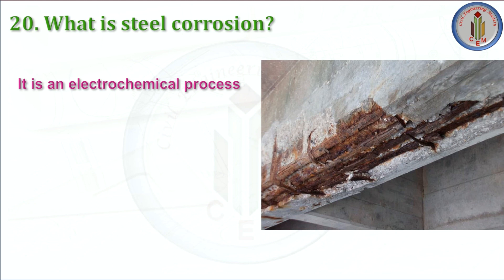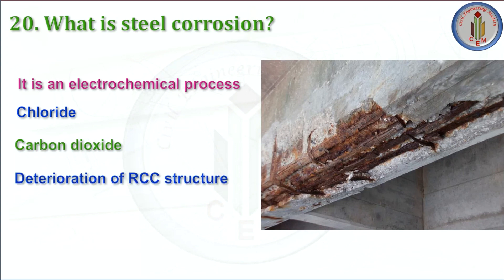What is steel corrosion? It is an electrochemical process. Steel bars get corroded due to chloride and carbon dioxide present in the atmosphere. When steel bars are exposed to these chemicals, they get corroded, and this corrosion may cause severe damage to the structure. For a steel bar to lose 1 mm diameter due to corrosion, it takes 12.5 years, though it may reduce due to practical reasons. For a 6 mm diameter bar to corrode completely, it takes 75 years.